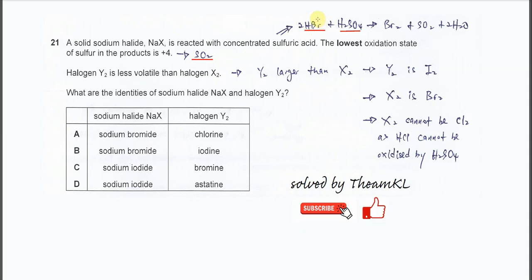The bromide here will be oxidized to bromine, because it goes from -1 to 0. Sulfur in H₂SO₄ is initially +6, and after the reaction it becomes +4, meaning it gets reduced.